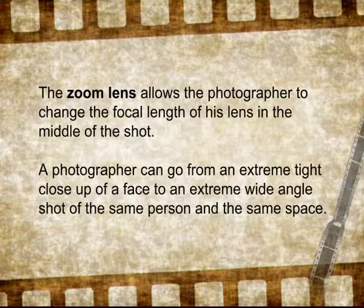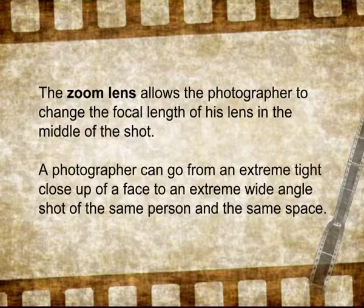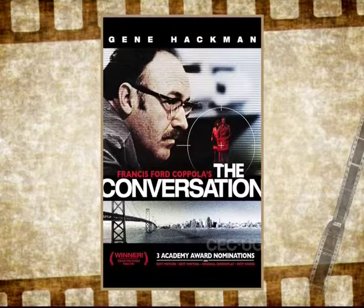Another category of lens is the zoom lens, which came into vogue from the 1960s onward. The zoom lens accommodates the functions of all three different categories of lenses. It is an extremely dynamic lens because it allows the photographer to change the focal length in the middle of the shot — going from an extreme tight close-up of a face to an extreme wide angle shot of the same person and space. A very interesting use of the zoom lens is found in Francis Ford Coppola's film The Conversation.